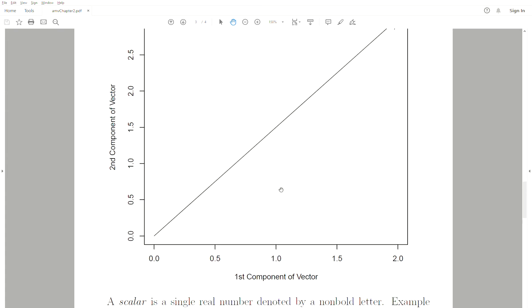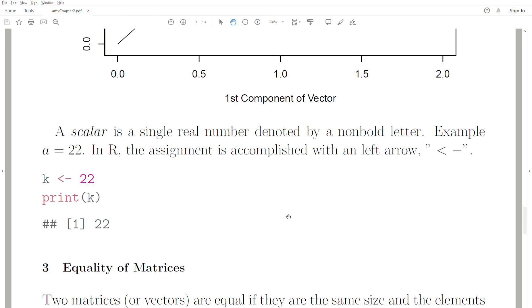A scalar is a lowercase, non-bold letter. For example, a equals 22. So 'a' is lowercase, not bold, so we know it's a scalar. To assign something to a variable in R, we use the left arrow. We assign the scalar 22 to 'k', and when we print it, we get 22.